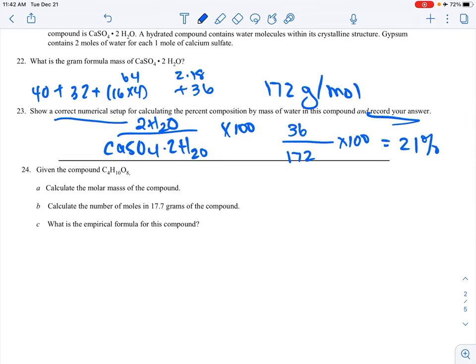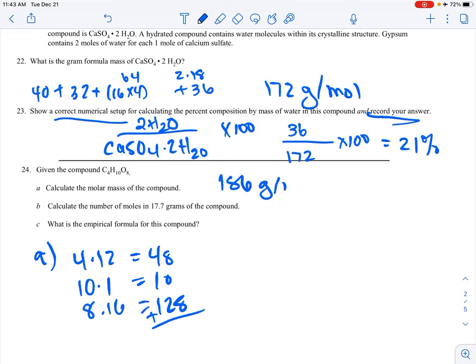24. Given the compound, calculate the molar mass of that compound. It's going to be 4 times 12, 10 times 1, and 8 times 16. You add them up. 12 times 4 is 48, this is 10, and 16 times 8 is 128. Add those up, and you get 186 grams per mole.